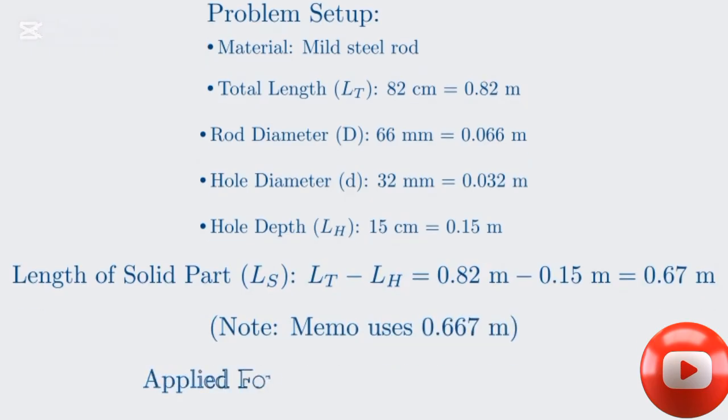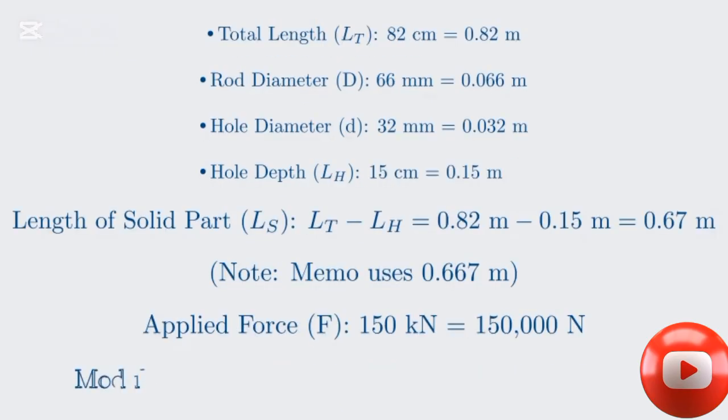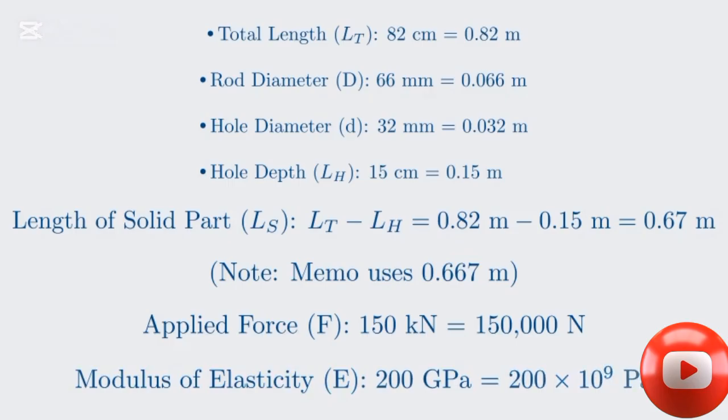A compressive force of 150 kilonewtons is applied. This converts to 150,000 newtons. Finally, the modulus of elasticity, or E, for the steel is given as 200 gigapascals, which is 200 multiplied by 10 to the power of 9 pascals.